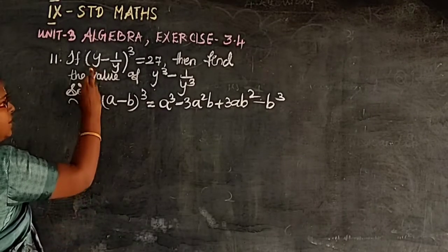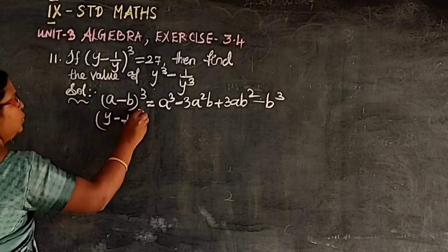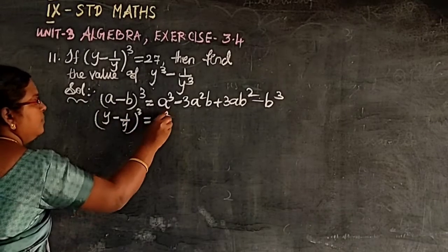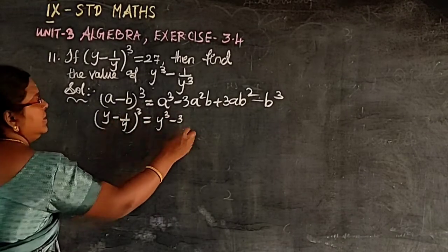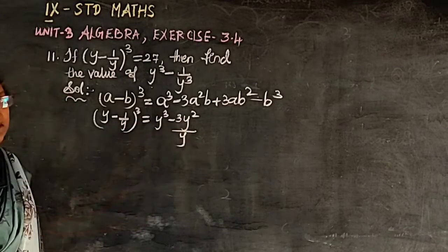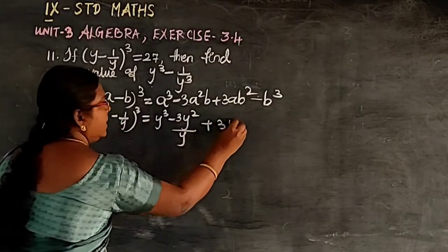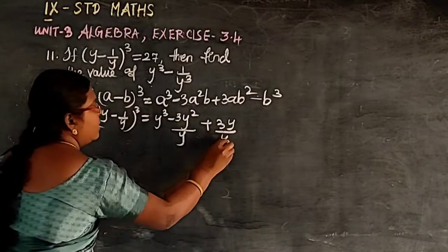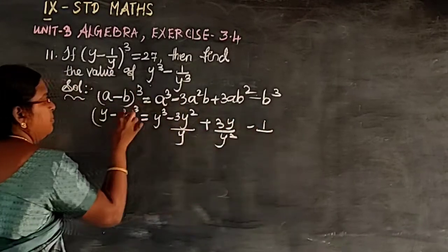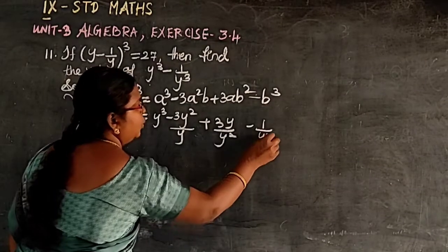Now, for (y - 1/y)³, we apply the identity. Here a = y and b = 1/y. So we get: y³ - 3y²·(1/y) + 3y·(1/y²) - (1/y)³.